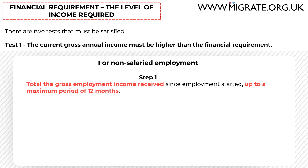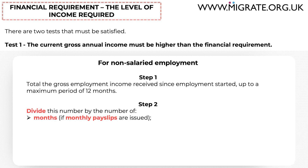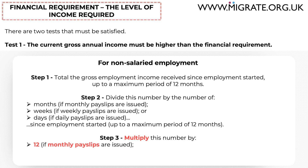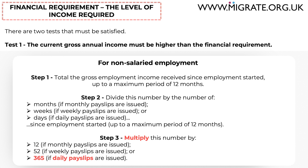The calculation involves a few more steps if employment is non-salaried. First, you must total the employment income the sponsor received since employment started, up to a maximum period of 12 months. Second, divide this number by the number of months, weeks, or days since employment started — up to a maximum of 12 months. For example, if the sponsor receives monthly payslips and has been employed for 4 months when the application is submitted, divide by 4. Finally, step 3 requires you to multiply this figure by 12 if monthly, 52 if weekly, or 365 if daily payslips are issued. The figure at step 3 will be the amount of non-salaried employment income includable towards part 1 of the two-part test.